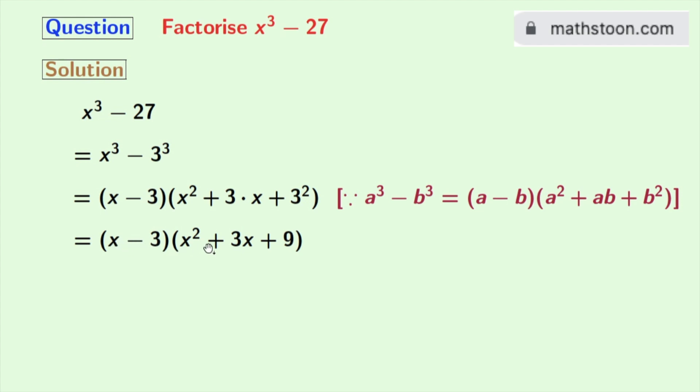(x² + 3x + 9). So finally we get x³ - 27 is equal to (x - 3)(x² + 3x + 9), and this is our final factorization. Thank you for watching, please